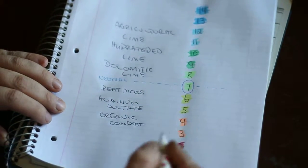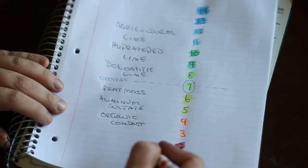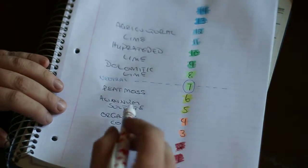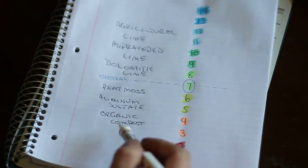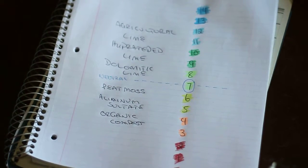Those three options as well as sulfur are all going to help lower the pH balance depending if that's what you want to do. Like I said, I prefer peat moss. The aluminum sulfate and the organic compost work just as well. It's just a matter of preference.